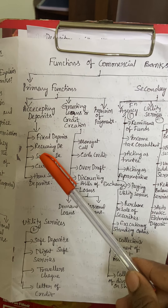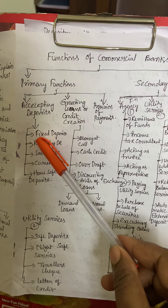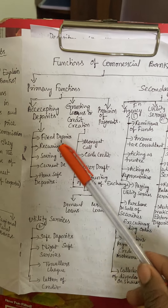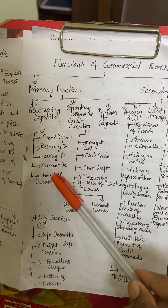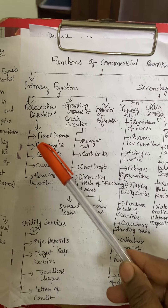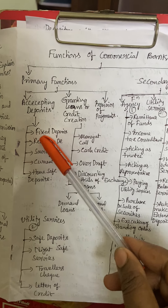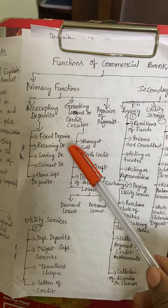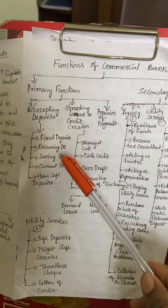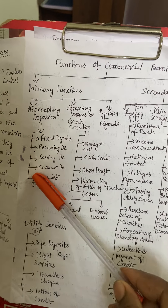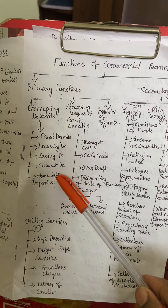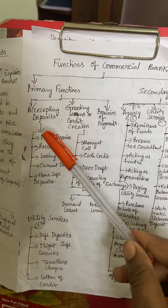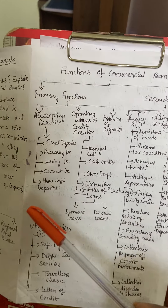In accepting deposits, we have many kinds of deposits when talking about commercial banks. The first one is fixed deposit, second is recurring deposit, then saving deposits, current deposits, and house-saved deposits. These are the important categories of deposits.